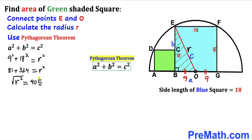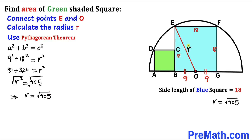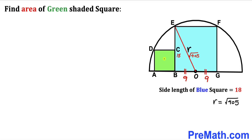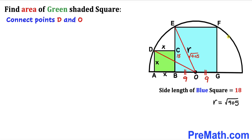Taking the square root on both sides, r = √405. Now we are going to calculate the area of the green shaded square. First we must find its side length — let's represent it as x for all four sides. Connecting point D to center O, we can see that DO is also the radius of the semicircle, so DO = √405.